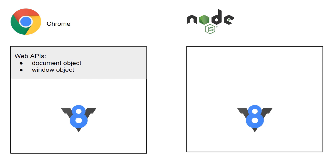For example, on the document object you can set up event listeners, you can access the actual HTML elements and modify them, and the window object holds loads of information like the current location you're browsing to. You might be surprised that these web APIs aren't actually part of the JavaScript language — they're provided via Chrome as web APIs.